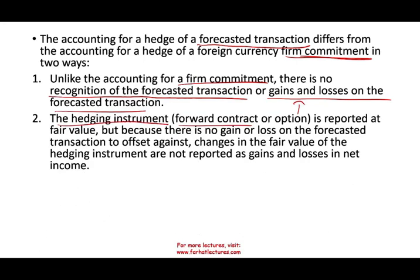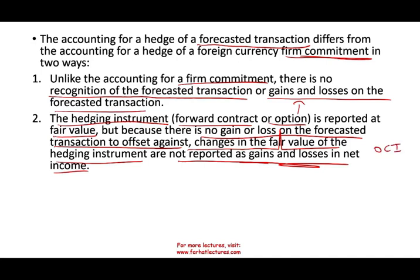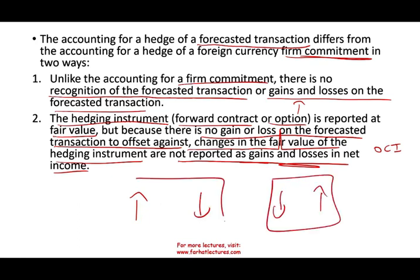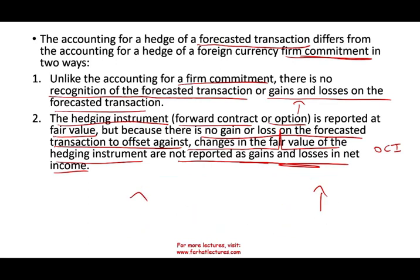The hedging instrument, whether it's a forward contract or option, is reported at fair value. But because there is no gain or loss on the forecasted transaction to offset it, changes in the fair value of the hedging instrument do not go on net income — they go into OCI, other comprehensive income. This is an important distinction. In all the other transactions we looked at earlier, if the hedging item went up, the hedging instrument went down, and they offset each other. But in a forecasted transaction, you don't have a hedging item — all you have is the instrument, whether the option or the contract.